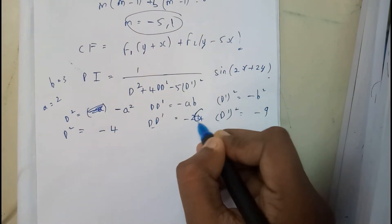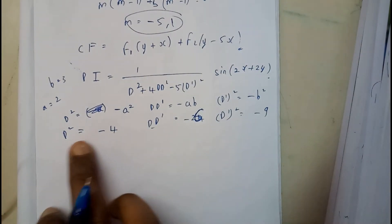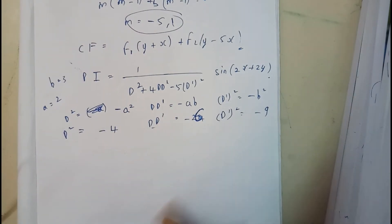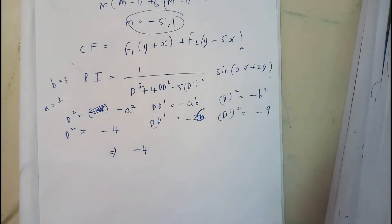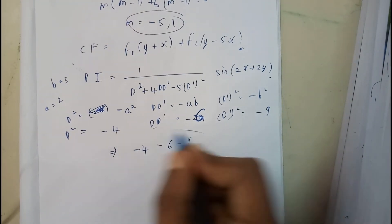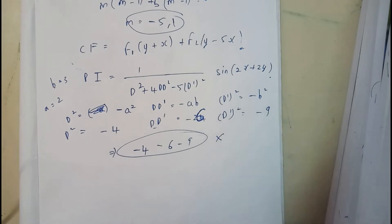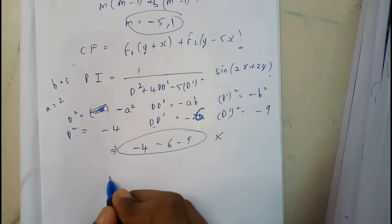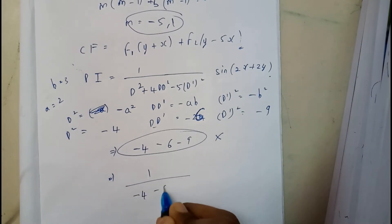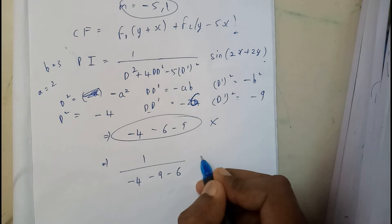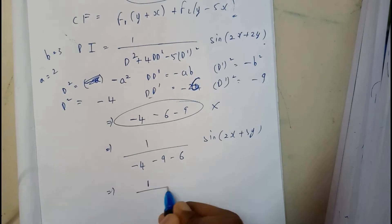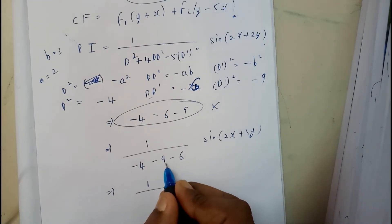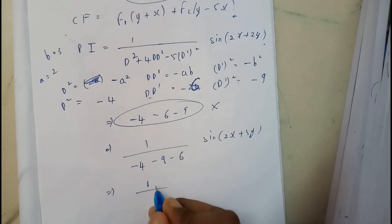Let us verify the denominator. Substituting the values: we check −4 + 4(−6) − 5(−9). Since all values are substituted and the denominator is not equal to zero, we can proceed directly. The denominator becomes −4 − 24 + 45 = 17, so the particular integral is (1/17) sin(2x + 3y).